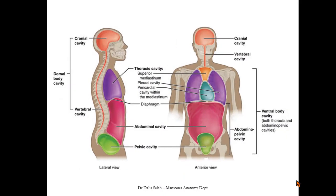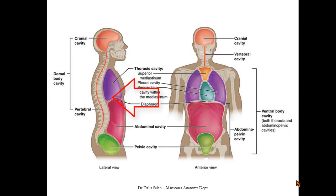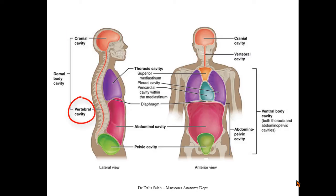As we can see in this diagram — this side view — we have two main cavities: one near the back, called the dorsal body cavity, and one in the front, called the ventral body cavity. The dorsal body cavity is further subdivided into two: above we have the cranial cavity, which lies inside the skull and contains the brain and its surrounding membranes; below it lies the vertebral cavity, which lies within the vertebral column and contains the spinal cord and its surrounding membranes.